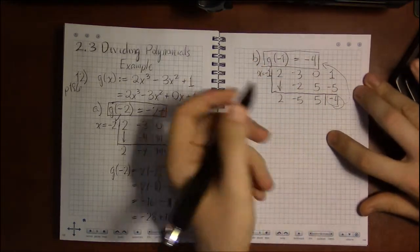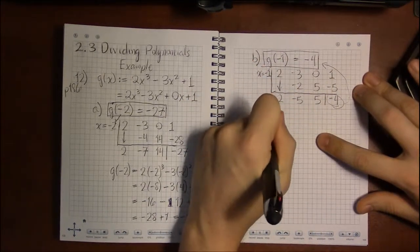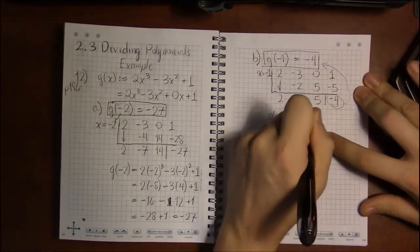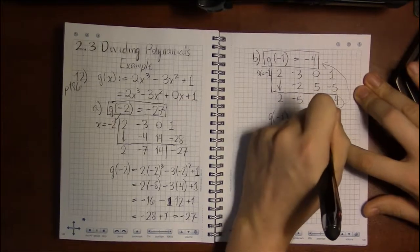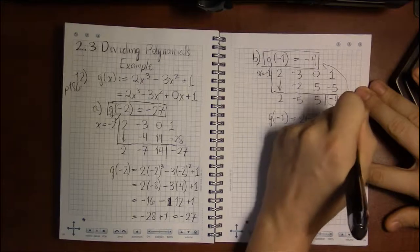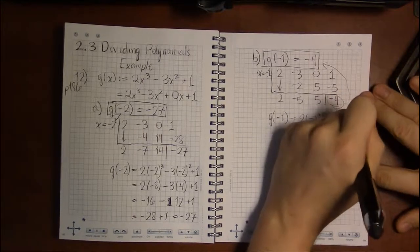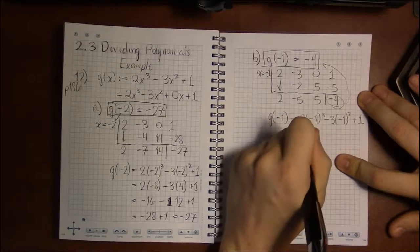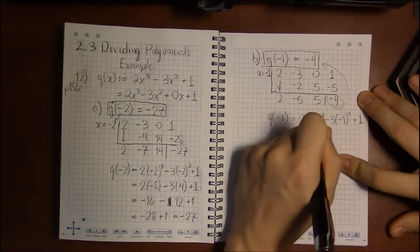And you can even double check that as well. g of minus 1, 2 times minus 1 cubed minus 3 times minus 1 squared plus 1. Well, minus 1 cubed, I think you'll find, is minus 1.